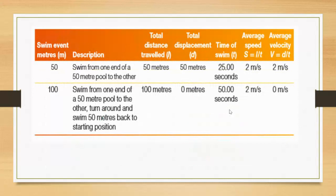In the swimming example, for a 50-meter swim the distance and displacement are the same, so average speed and average velocity will be equal. For the 100-meter swimmer who returns to the start, displacement is zero — distance is 100 meters but starting point and ending point are the same. Because displacement is zero, velocity is also zero. This is a common trick question: if displacement is zero, then the velocity of that person is also zero.